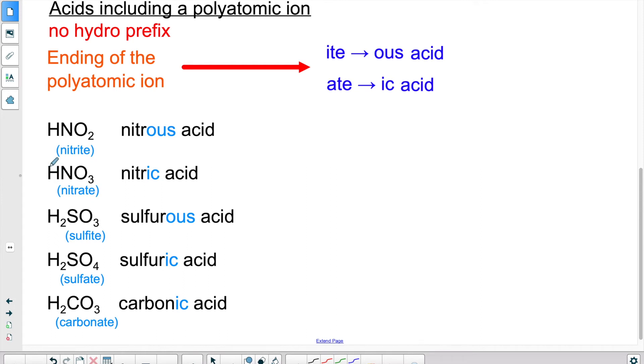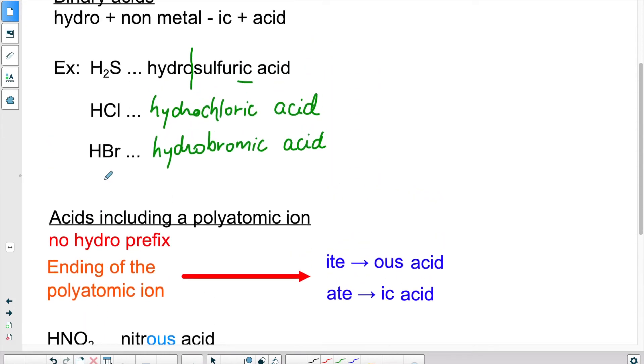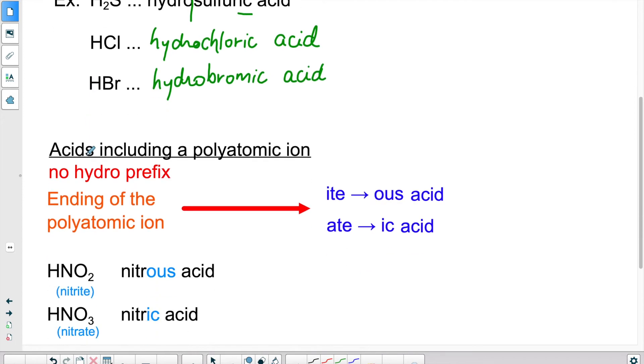Here we have nitrate. Again, we don't pay attention to the H. We don't put hydro. So nitrate, ATE becomes IC. This becomes nitric acid. Because there's no hydro in front, we know that it's an acid that contains a polyatomic ion, as opposed to just a simple acid, a binary one.